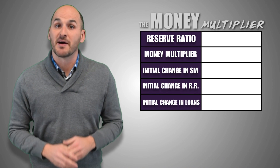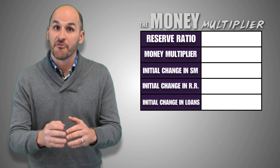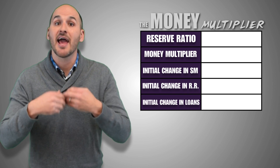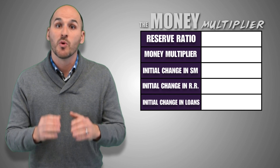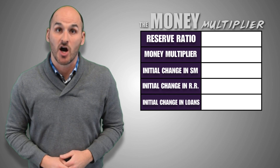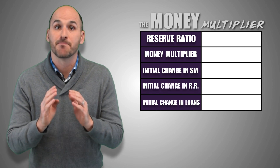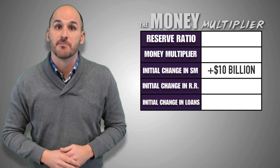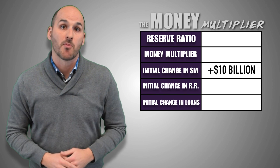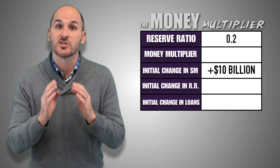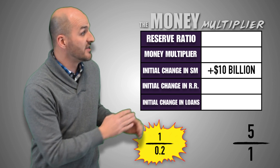Now suppose that the Federal Reserve buys $10 billion worth of treasury bonds from investors in the open market. When the Fed purchases the T-bonds, it hands over $10 billion in new money to investors in exchange for their assets, which injects new money directly into the economy from the Treasury. As a result, the open market operation conducted by the Fed initially increased the money supply by $10 billion. Now assume that at the time of the open market operation, the reserve ratio is 20%, and by using the reserve ratio, we can determine that the money multiplier is 5.